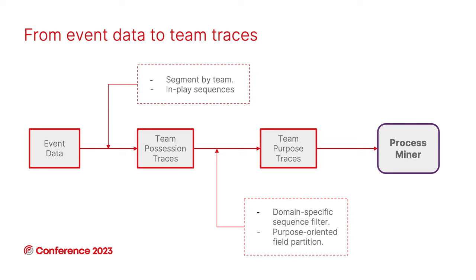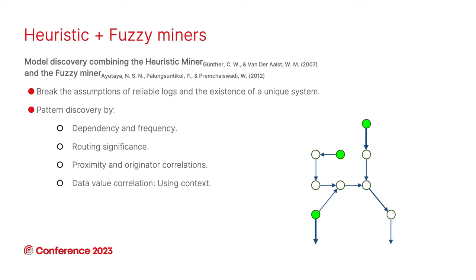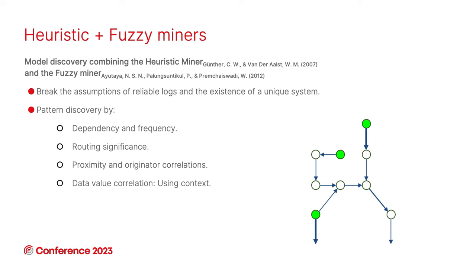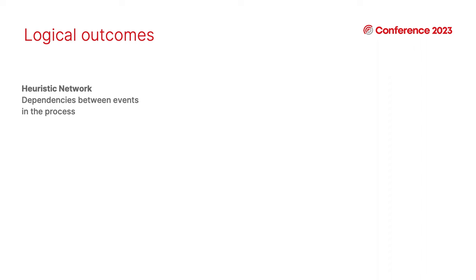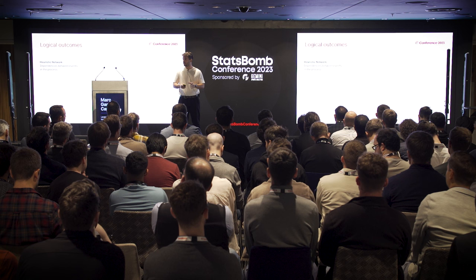We also apply a simplification step based on different approaches — some presented here last year — where we create a field partitioning. This allows us to identify similar sequences not by exact action coordinates but by the zones they traverse in the field. Overall this is the pre-processing pipeline for process discovery, producing what we call team purpose traces, which are the sequences fed into the process miner. The process miner is a data mining algorithm that doesn't predict a metric but rather creates an explanation — a logical model of how a team performs a given goal.